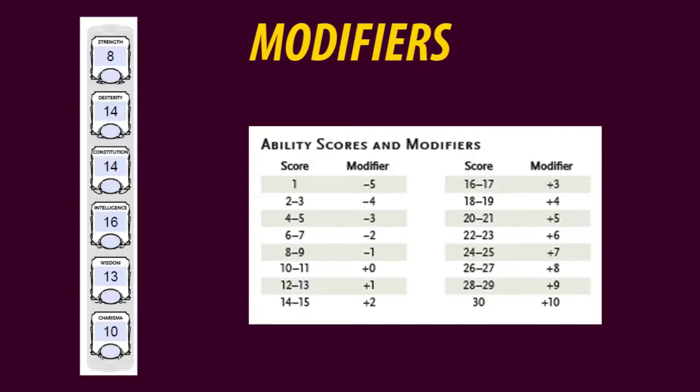Now that we have our ability scores, it's time to get our modifiers, which are in fact more important than the ability scores themselves, as they give us the bonuses and penalties during gameplay. The modifiers can be found in the ability scores and modifiers table. The scores that represent average are 10 and 11, giving a 0 modifier. Everything below 10 results in a negative modifier, while everything above 11 gives a positive modifier. By reading from the table, my character's modifiers will look like this.